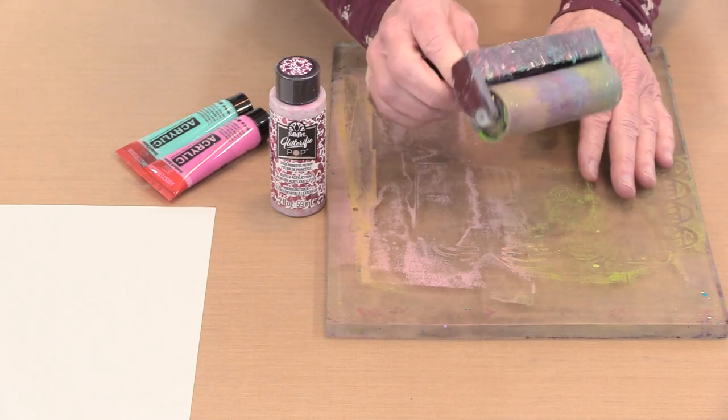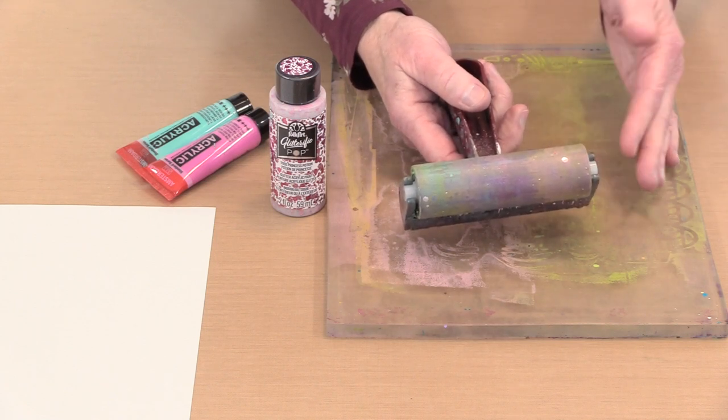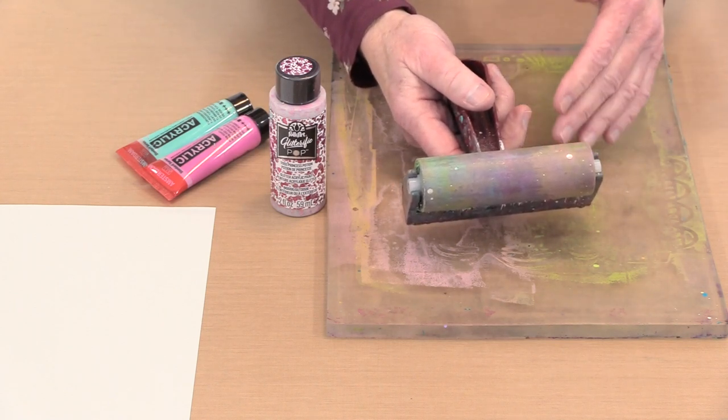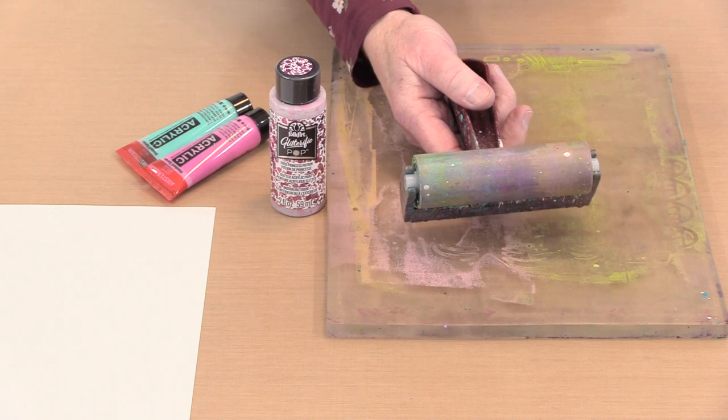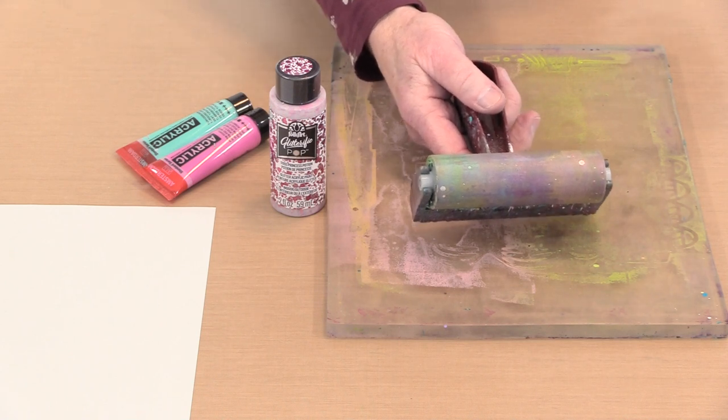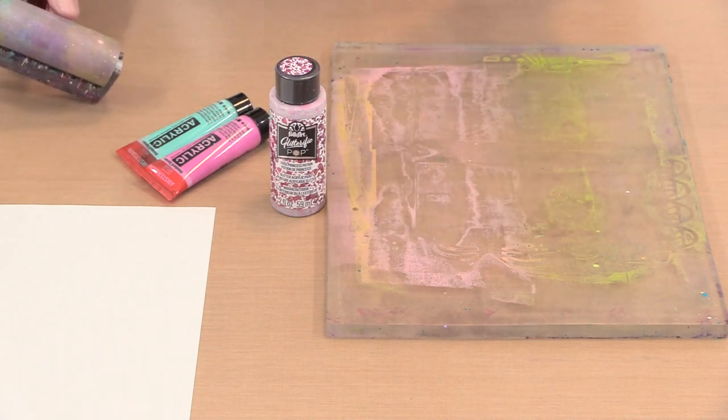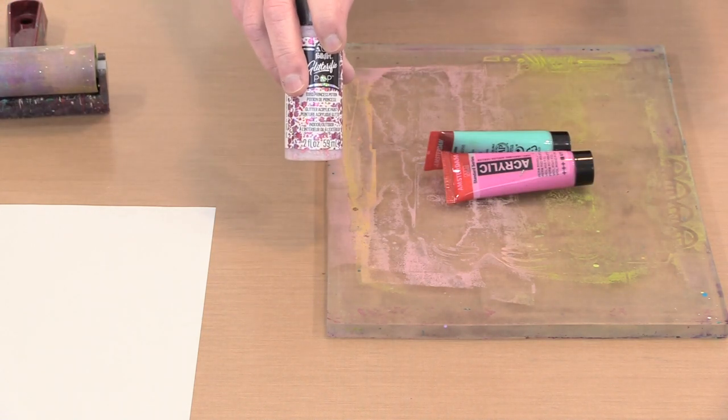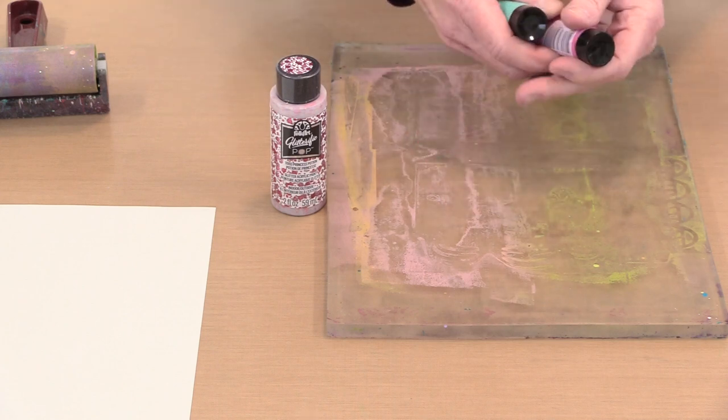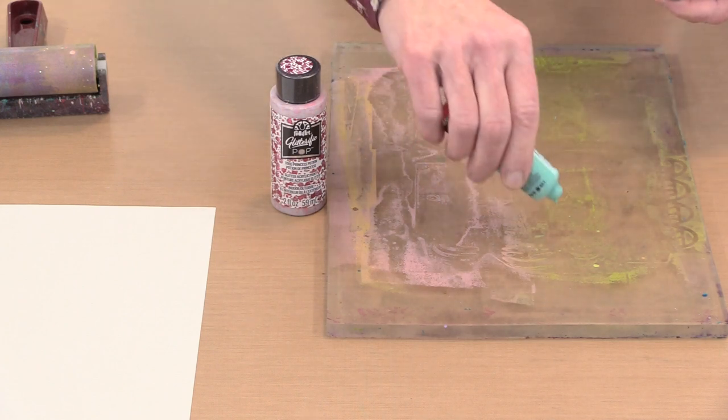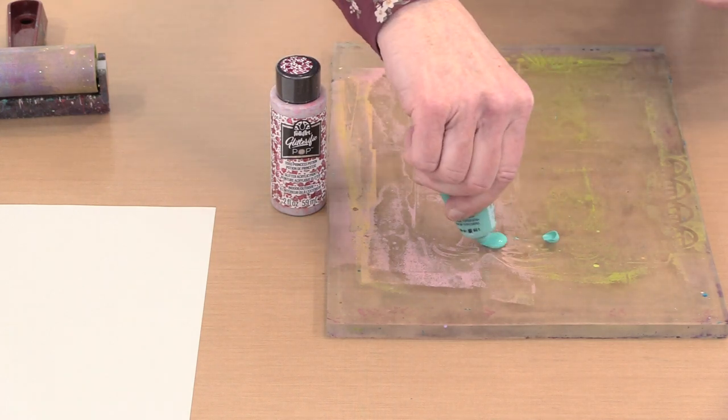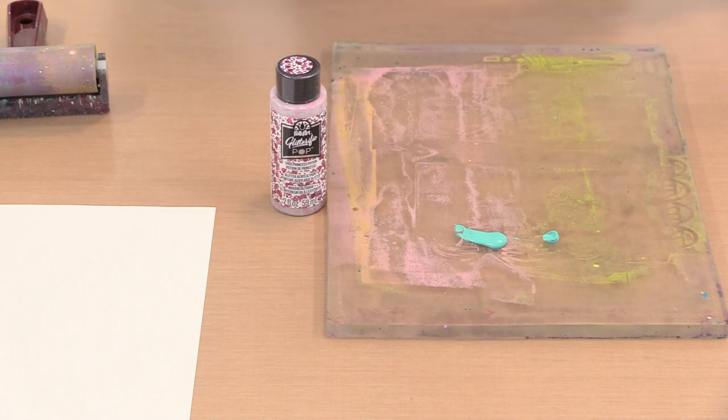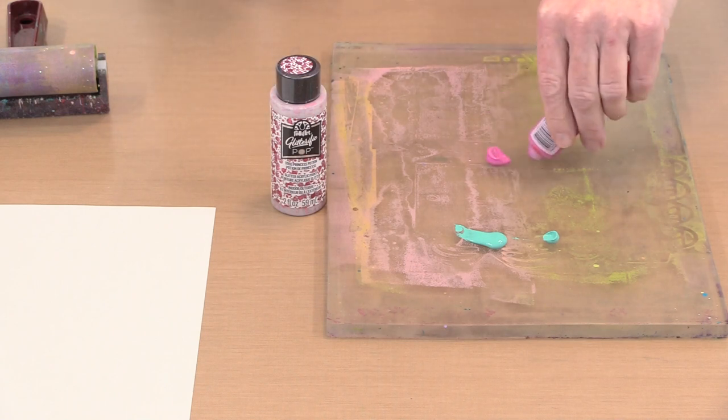So I use an old kind of a crappy brayer and I do try to be careful about cleaning it up after I roll out a color. With that said, I probably won't do that exactly while I'm filming. So I have a couple of colors of Amsterdam acrylic paint and I have the Princess Potion Glitterific Pop. All I'm going to do is put these colors out and I'm just going to kind of mix this around. I'm going to mix the two colors and I'm going to mix the Glitterific Pop with it at the same time.